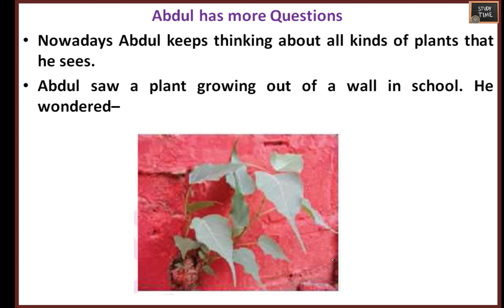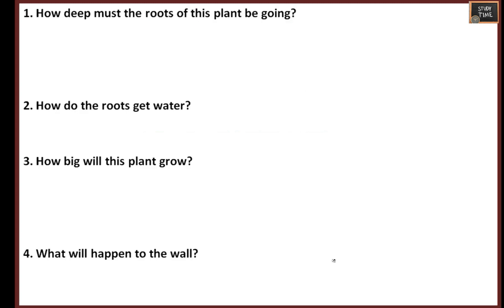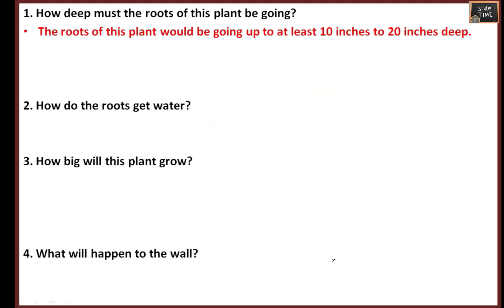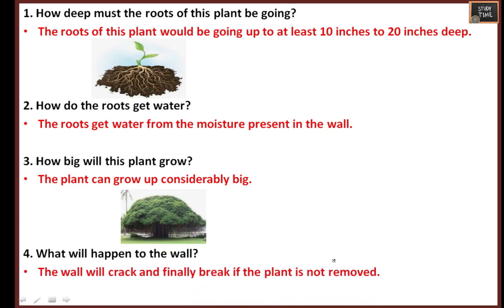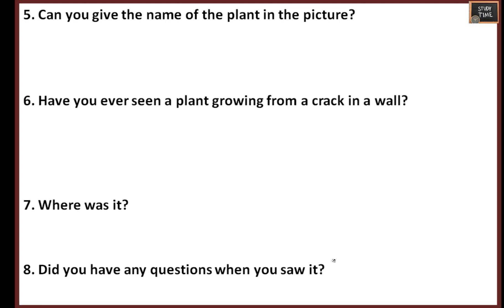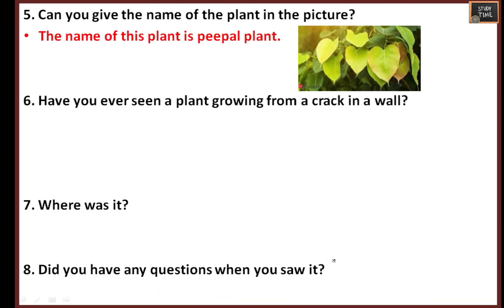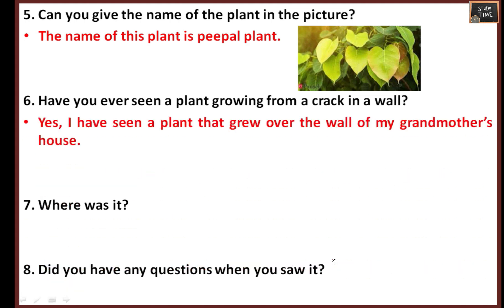Abdul saw a plant growing out of a wall at school and wondered how it was growing. The roots would be about 10 to 20 inches deep, getting water from the moisture present in the wall. The plant can grow considerably big. The wall will crack and finally break if the plant is not removed. This is a peepal plant.